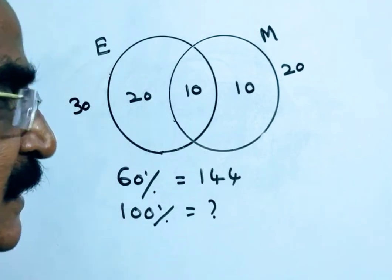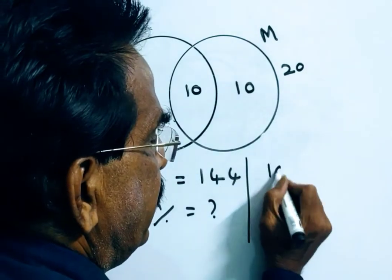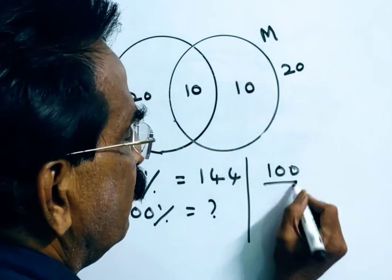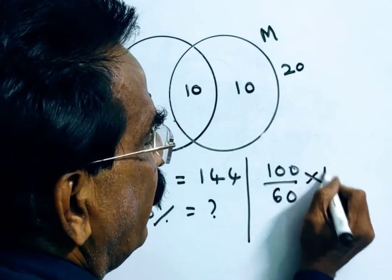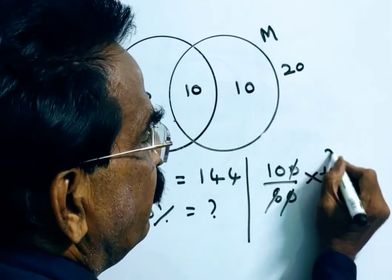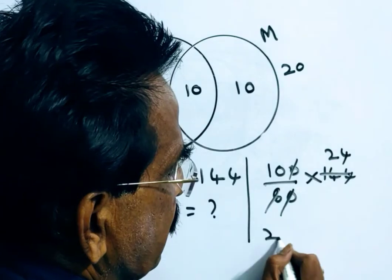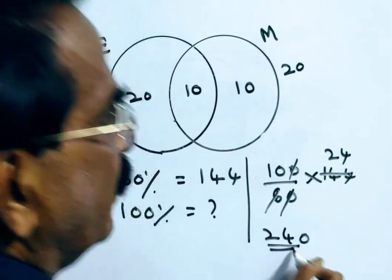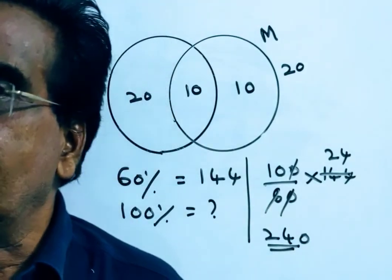Then what is 100 percent? So 100 over 60, into 144. Zero, zero cancel. 624. 24, 10, 240. 240 is the total number of students.